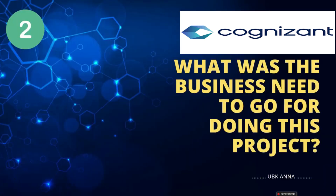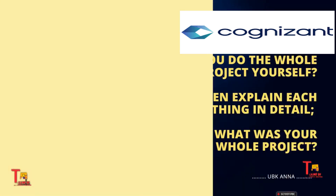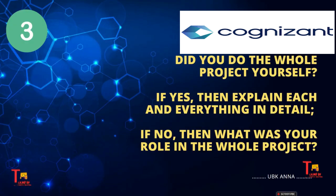The second question goes like: 'What was the business need for implementing or doing this project?' Here you have to answer: 'The project was initiated because of [explain the specific business need or problem that the project aimed to address].'